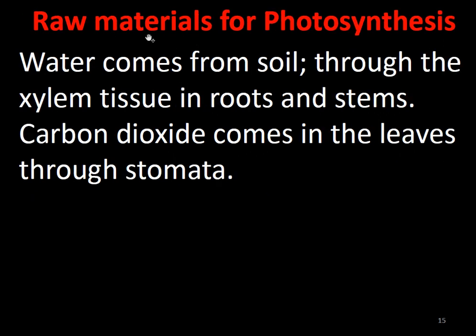The raw materials for photosynthesis are water and carbon dioxide. Water is obtained from the soil through the roots and stems of plants. Carbon dioxide enters the leaves through stomata. So the outside raw materials required are water from the soil and carbon dioxide through the stomatal openings.